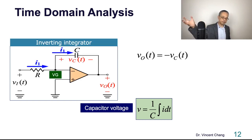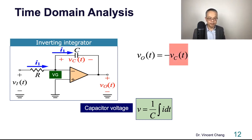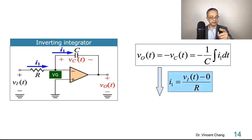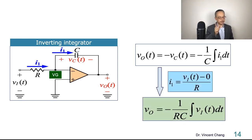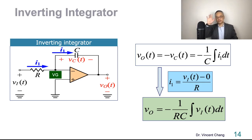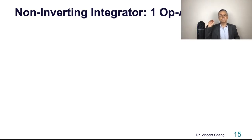Now we bring back the original circuit. Plugging the capacitor voltage formula into the highlighted expression and applying Ohm's law with the virtual ground, you get the integration formula: V_out is the negative integral of the input voltage with respect to time, scaled by 1/RC. This is the inverting integrator — the output is the negative integration of the input signal with respect to time.